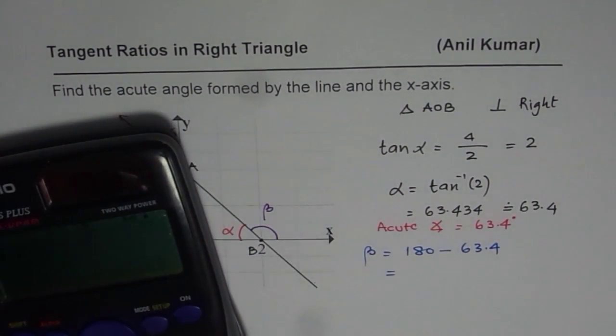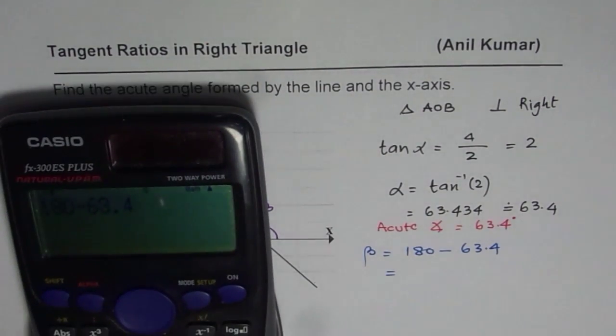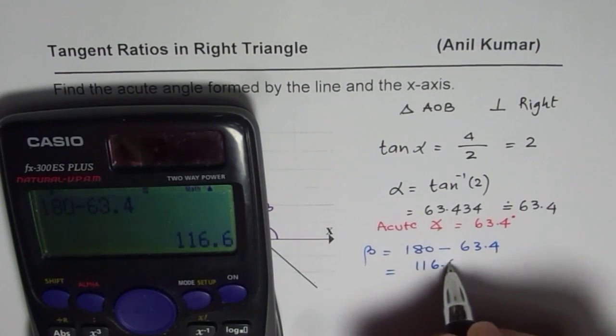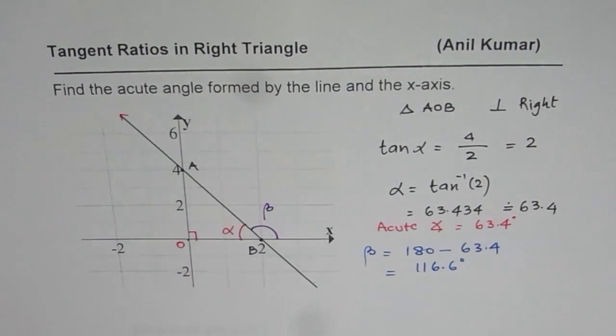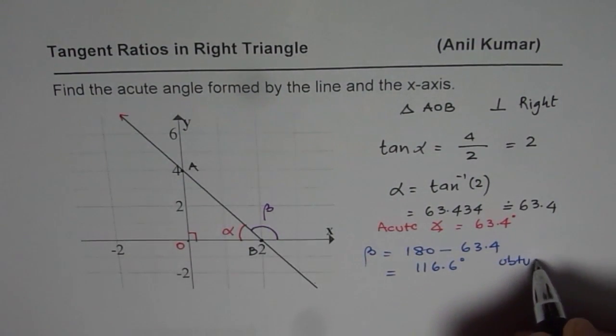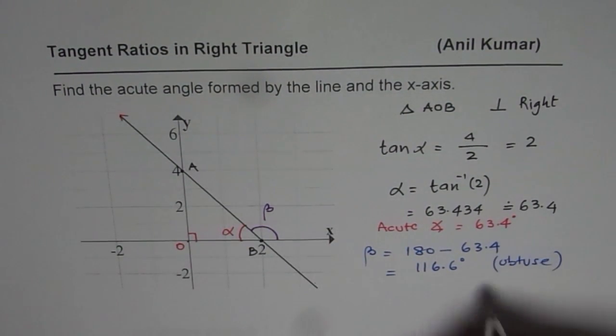So it is 180 minus 63.4. That equals, in decimal, writing to one decimal place, 116.6 degrees. So in this particular case the obtuse angle is 116.6 degrees.